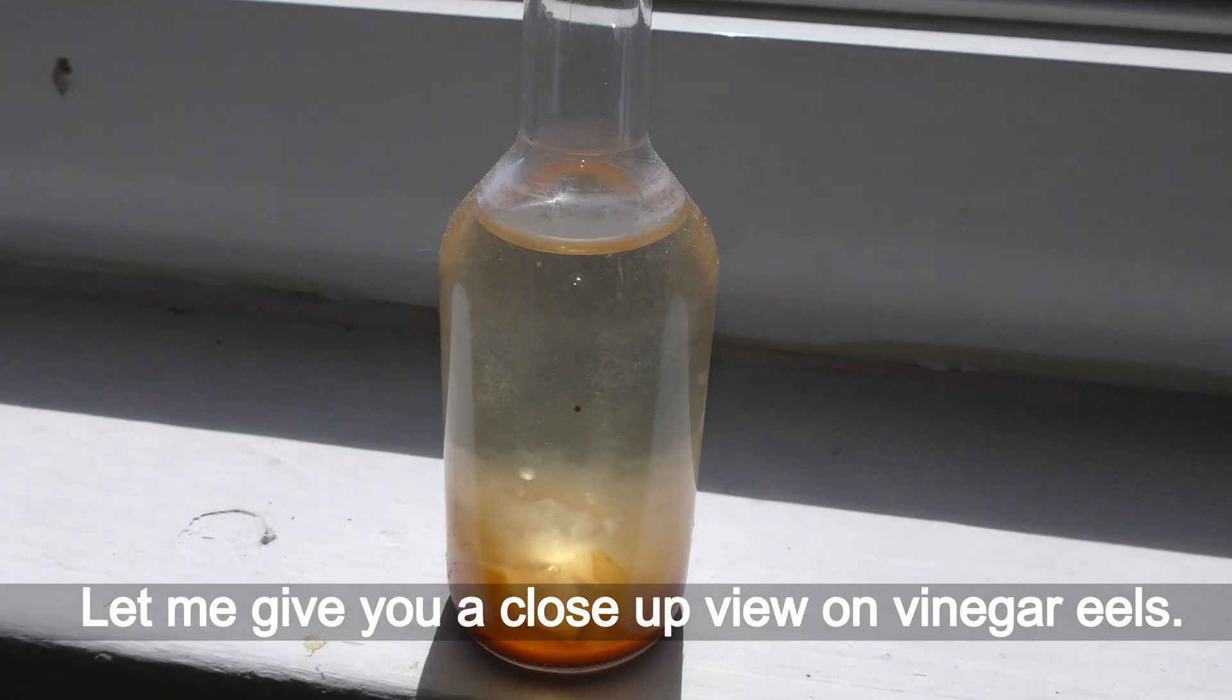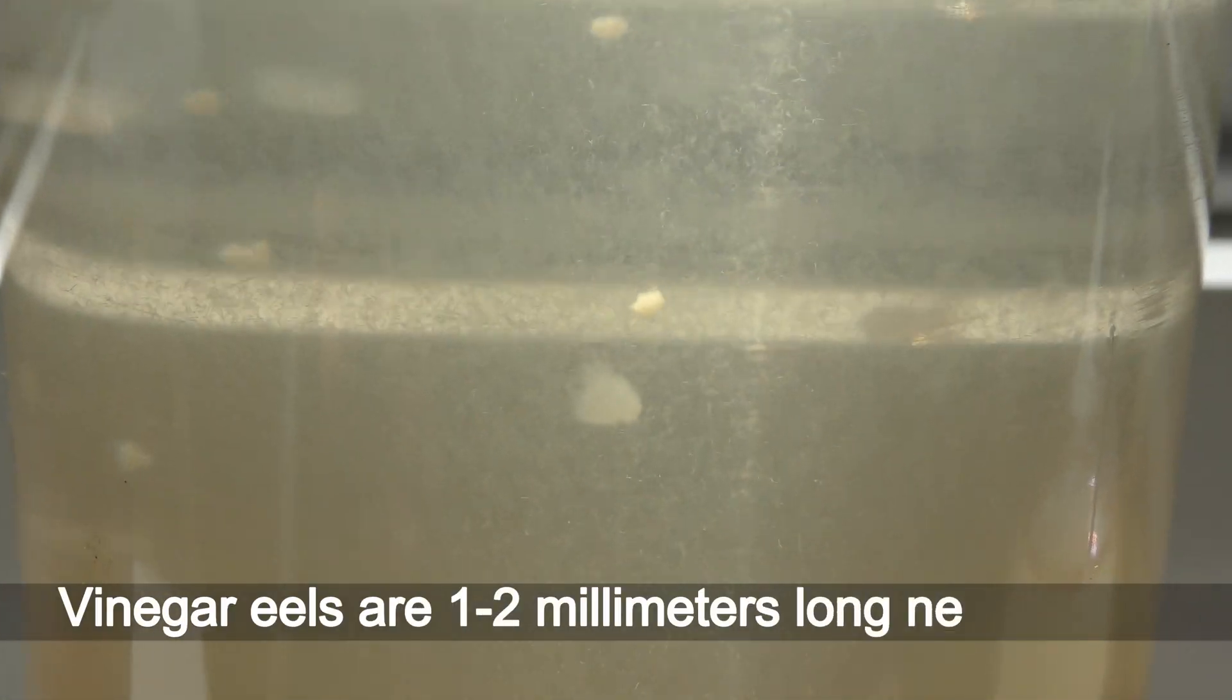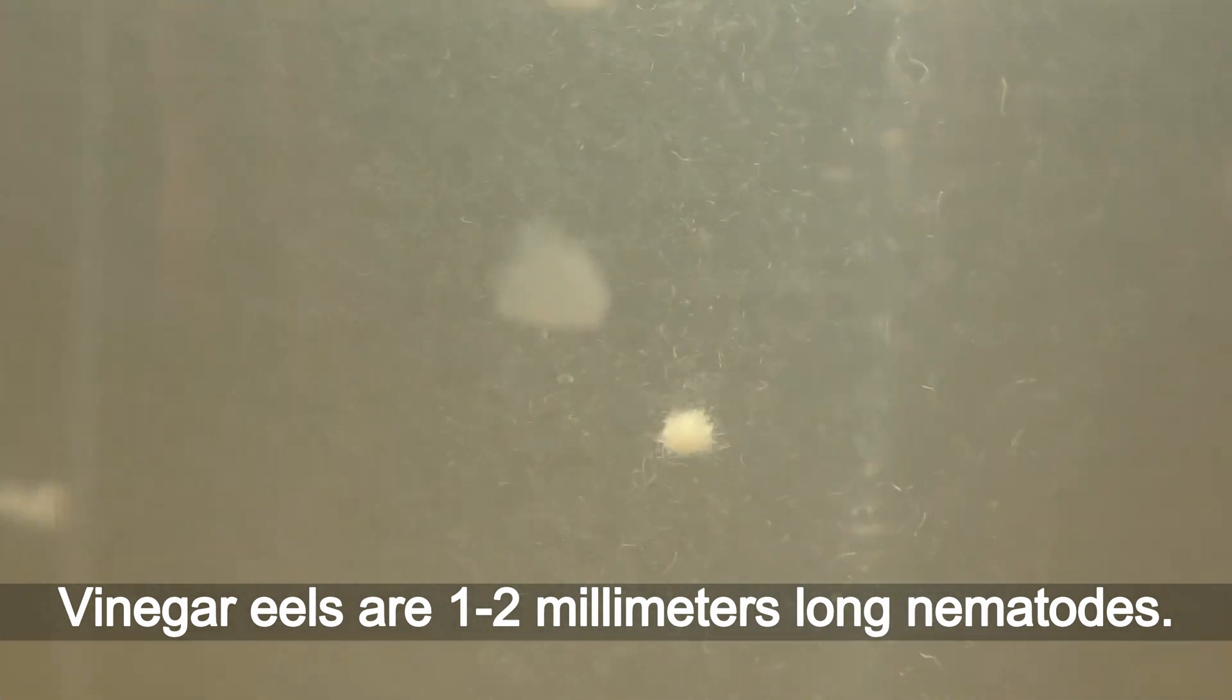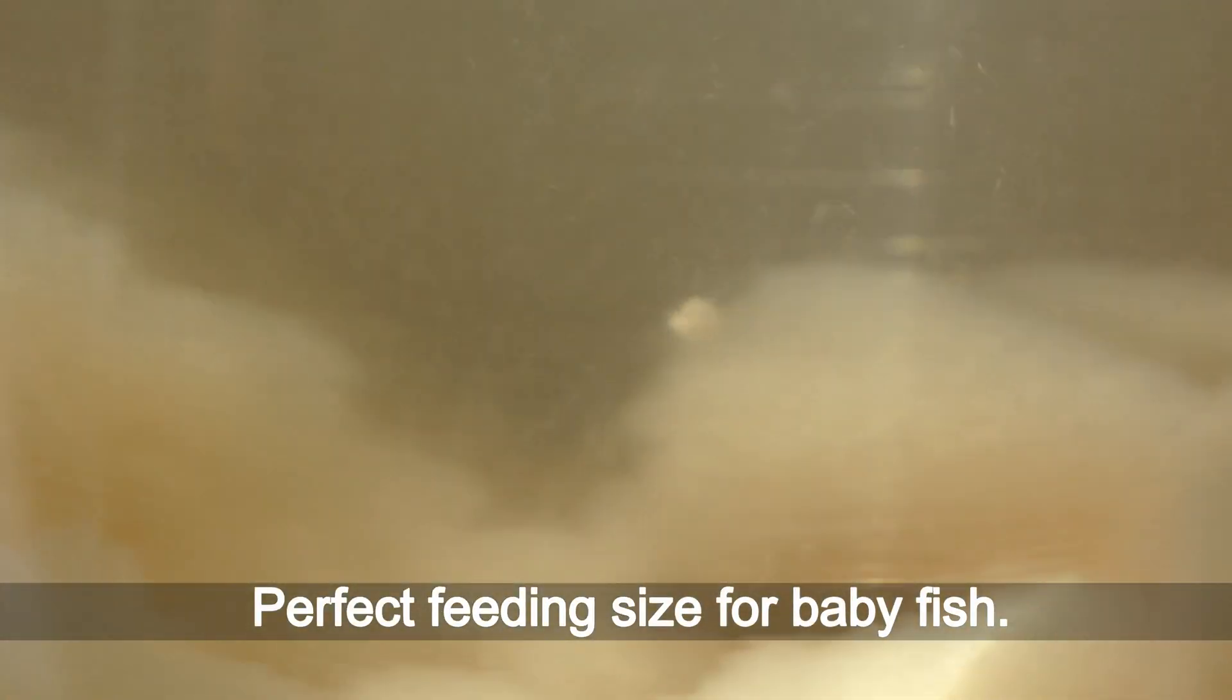Let me give you a close-up view on vinegar eels. Vinegar eels are 1-2 mm long nematodes, perfect feeding size for baby fish.